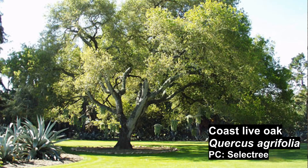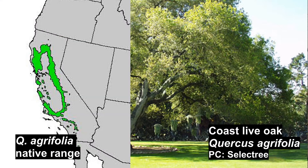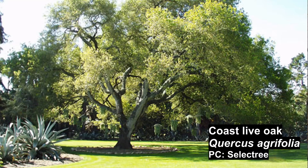Let's use Coast Live Oak as an example. This is a native California species, and the common name is useful in that it gives you quite a bit of information. 'Coast' indicates that this tree is found more in coastal regions, and 'Live Oak' indicates that this is an evergreen tree, not a deciduous one. But I have heard this species referred to with multiple different names — I've heard it called a scrub oak, I've heard it called just a live oak, and those two common names also refer to other species.